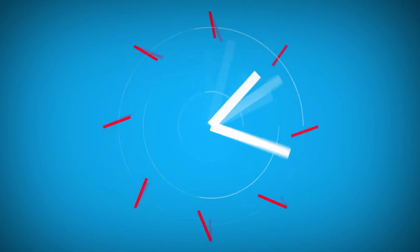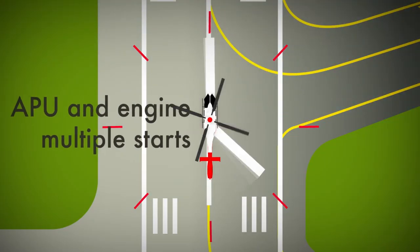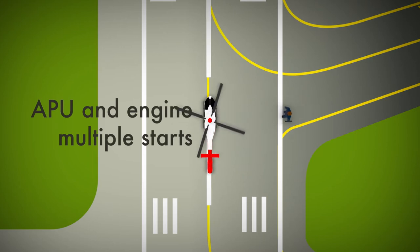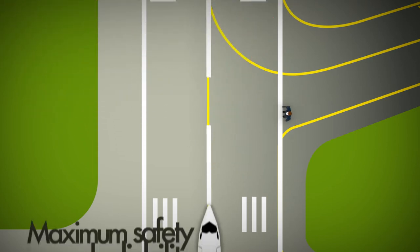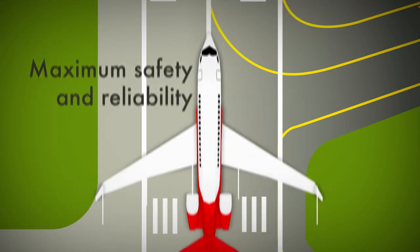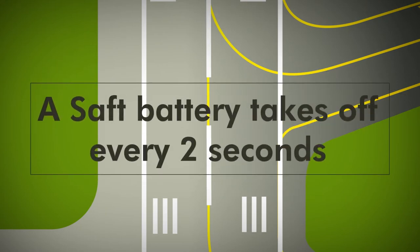What is a robust battery? One that enables the APU and engine to start consistently when needed while avoiding dispatch delays. It also provides emergency power when required.